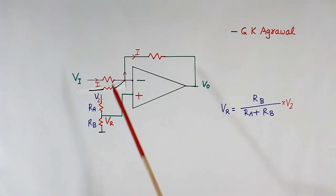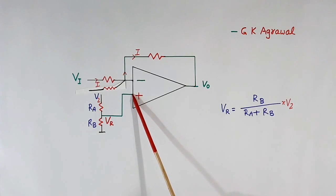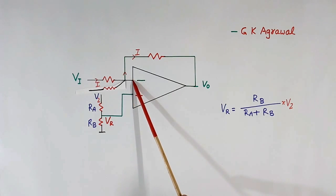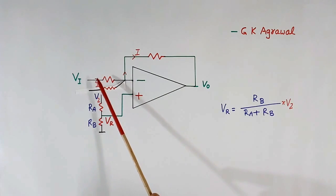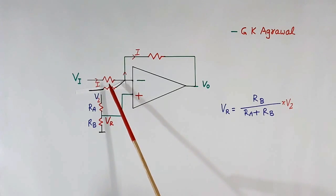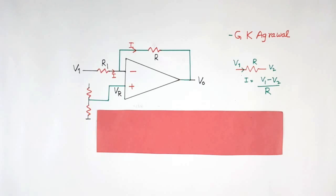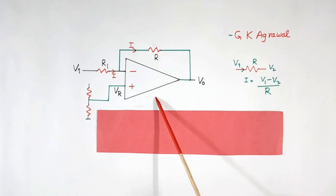So first we will calculate the voltage at the positive input point. Then, as per the first rule, the voltage at the negative terminal will equal that voltage. Then, as per the second rule, we will calculate the currents at the input and feedback resistors, and their total will be equal to the feedback current. Now we will find the equation of the circuit using those 2 rules.